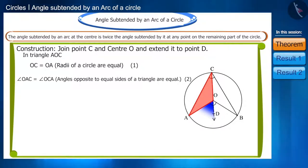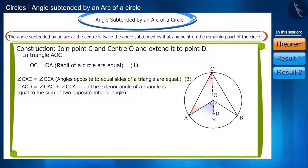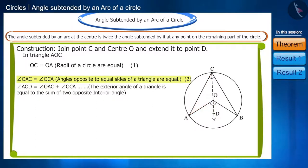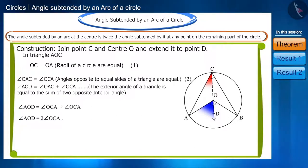Angle AOD is the exterior angle of triangle AOC. That's why we can write angle AOD as equal to the sum of these two angles — angle OAC and angle OCA. Therefore, angle AOD equals twice angle OCA.